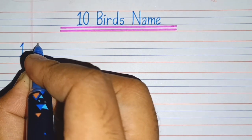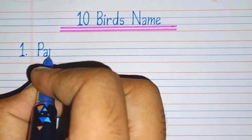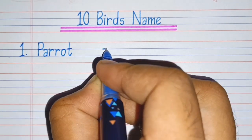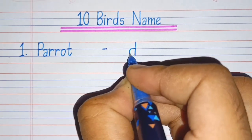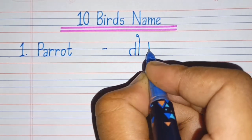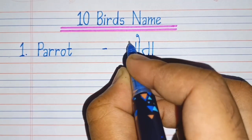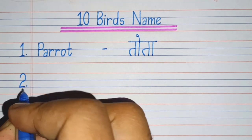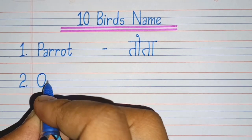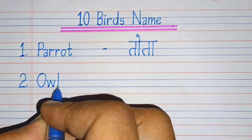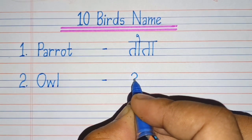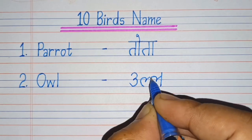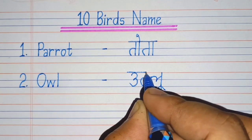First number: P-A-R-R-O-T, Parrot. Parrot means Tota. Second number: O-W-L, Owl. Owl means Ullu.